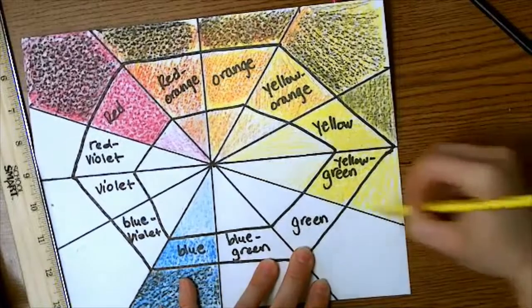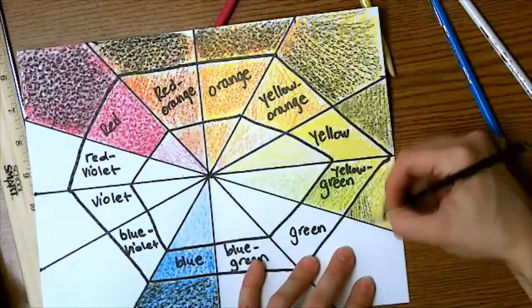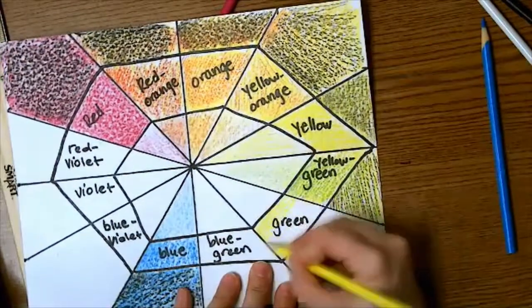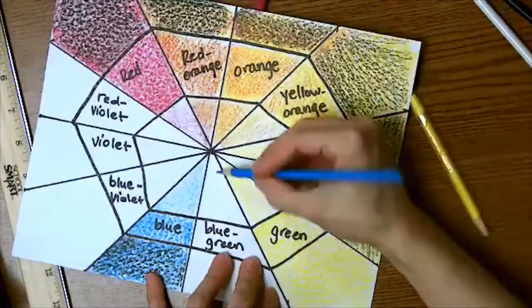So I started with yellow for the yellow green section because yellow is lighter than blue, and I'm just repeating the process. I started with yellow again because yellow is lighter than blue.